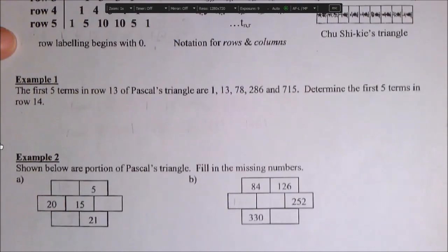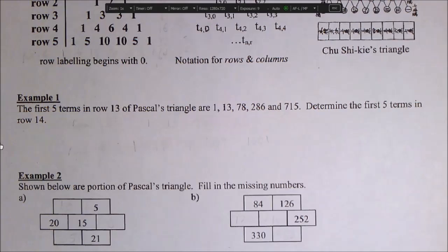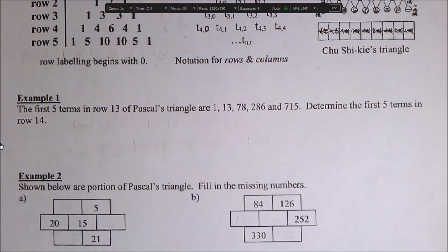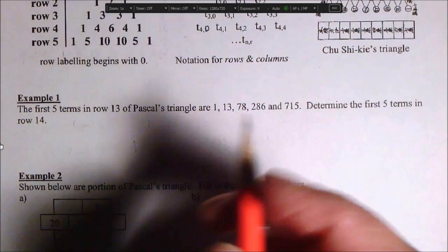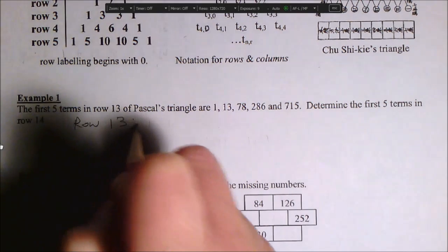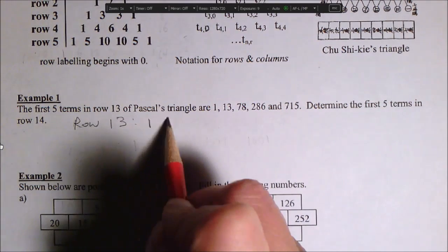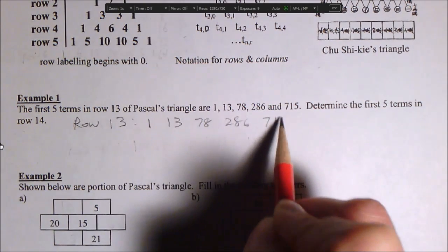So just a little bit of practice using the triangle. Example 1 says the first 5 terms in row 13 of Pascal's triangle are 1, 13, 78, 286, and 715. Determine the first 5 terms in row 14. So watch this. Row 13 is, they said 1, 13, 78, 286, 715.